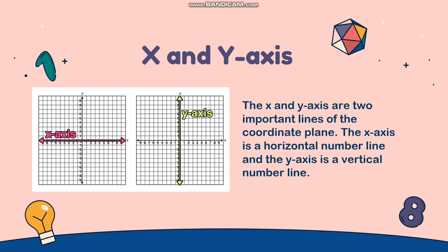The x-axis and y-axis are two important lines of the coordinate plane. The x-axis is a horizontal number line and the y-axis is a vertical number line.